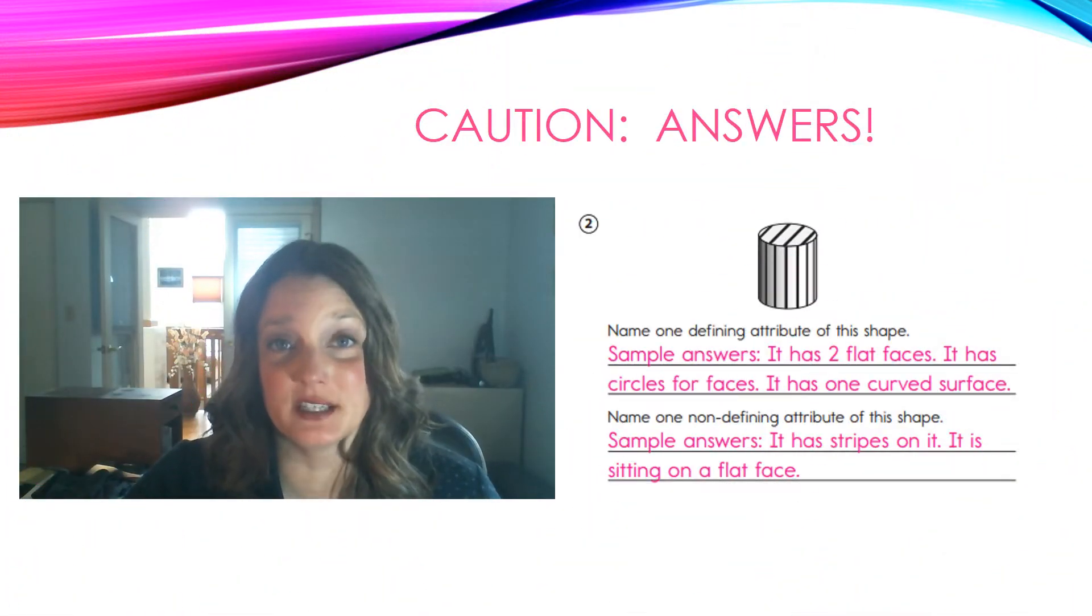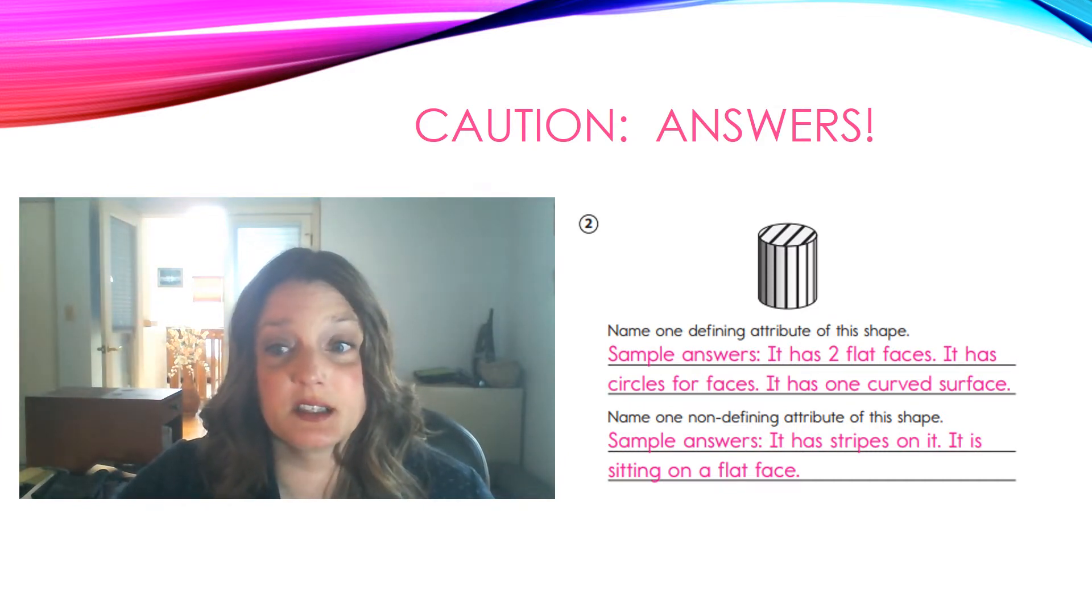Okay, time to check your answers. You could have more than one answer for each question. For the defining attribute, you could have said it has 2 flat faces, or it has circles for faces, or it has 1 curved surface. For the non-defining attributes, you could have said it has stripes on it, or it is sitting on a flat face.